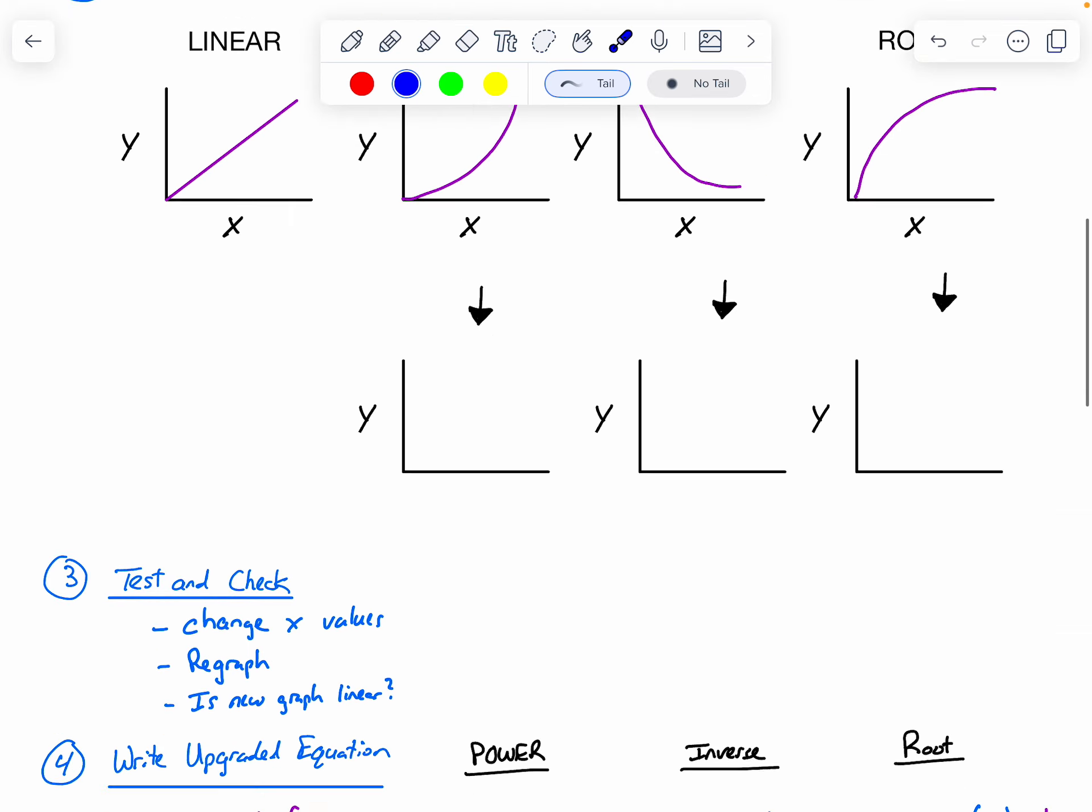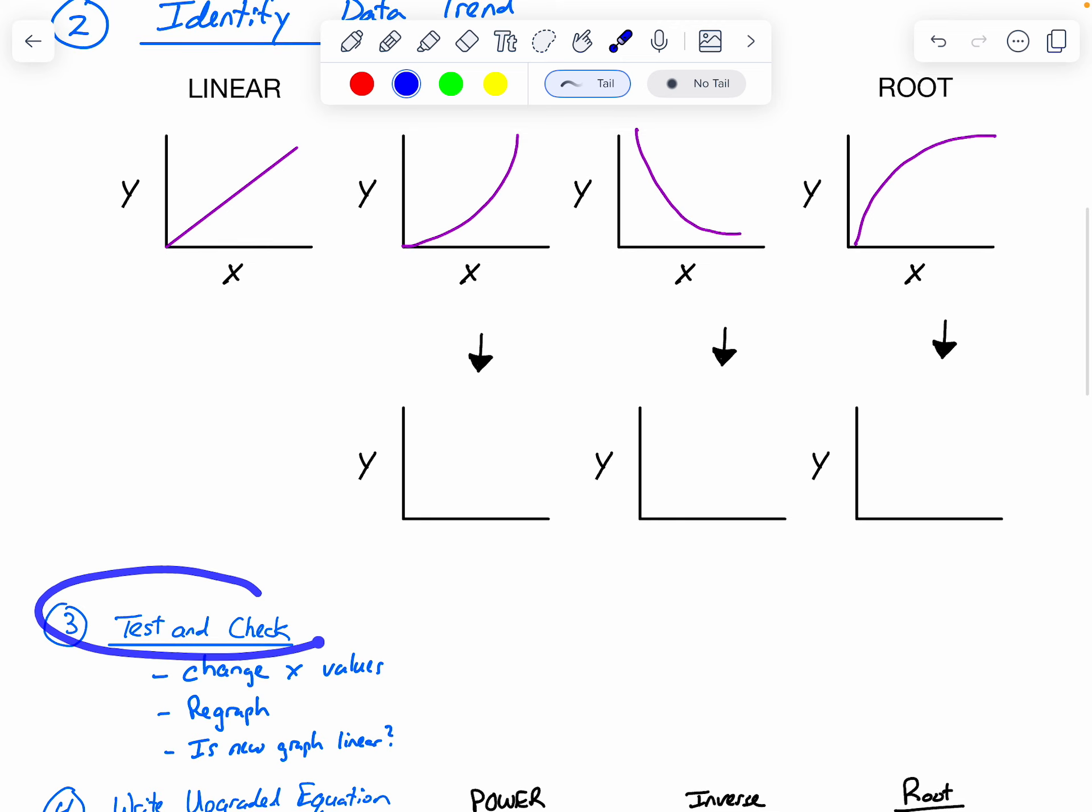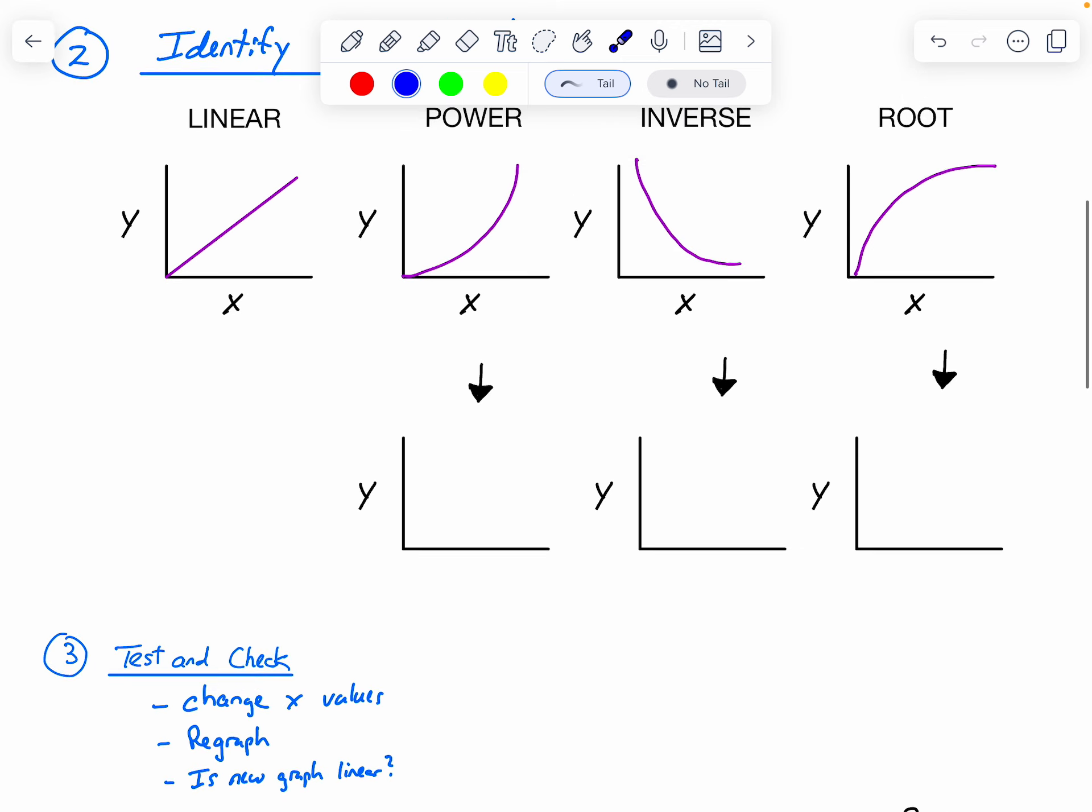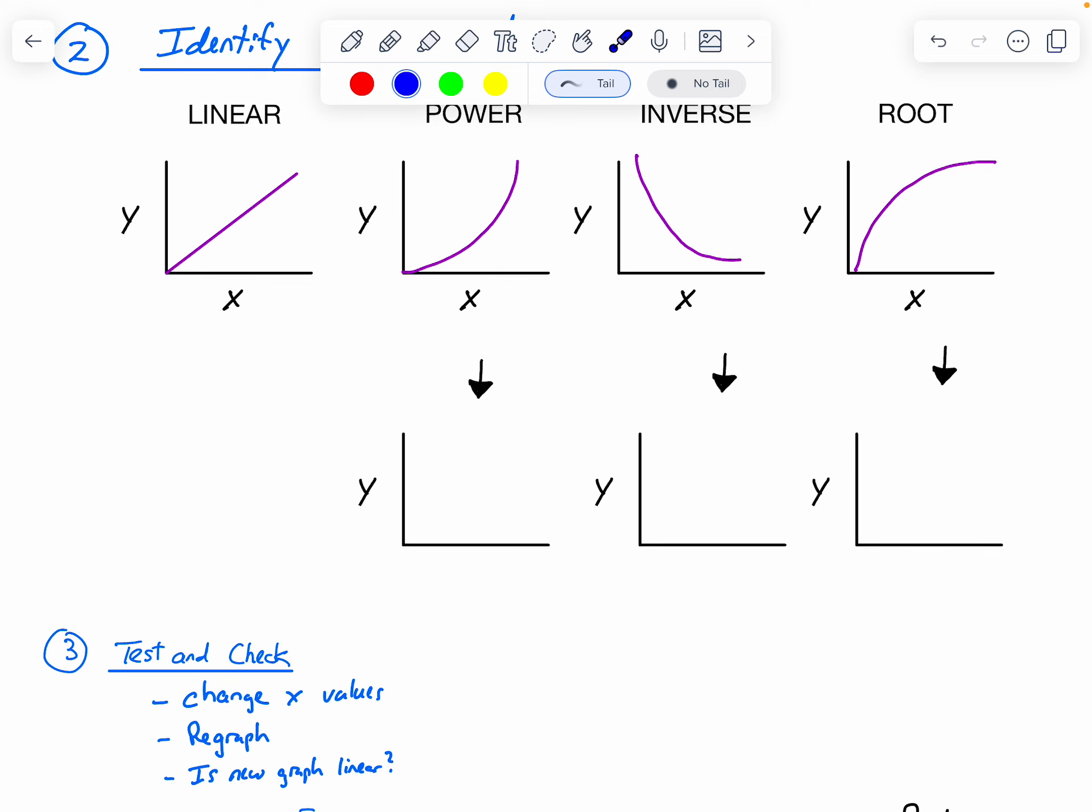For step three, you are going to test and check. So you are going to keep your original y values and then regraph based on what you think the x-value relationship is. If it's a power relationship, you will regraph by changing all of the x values to x to some power, like could be x squared, x cubed, x to the fourth power. When you regraph, and this is the key thing, your new graph should be linear.